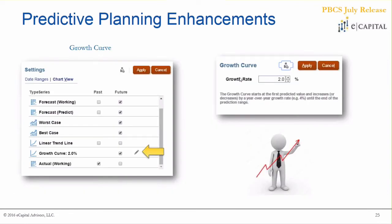The last new piece of predictive planning functionality is the ability to add a growth curve. By default that growth curve is 2%, but you can change it. Enable it by selecting the checkbox for the future, then click the pencil icon to adjust your growth rate before it's added to your predictive planning interface. Once added, you can always modify that growth curve at any time — it can be a living piece of your predictive analysis.